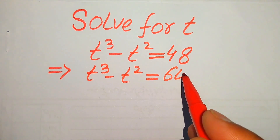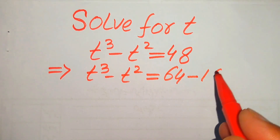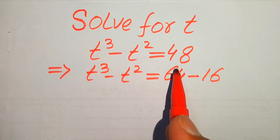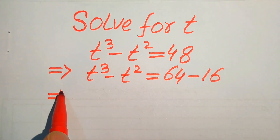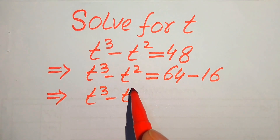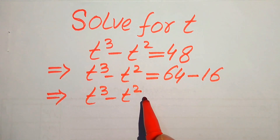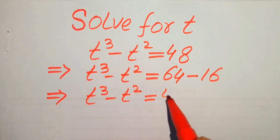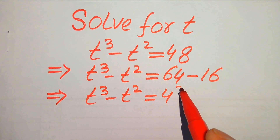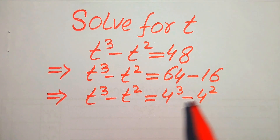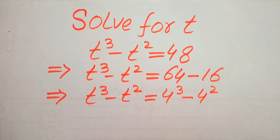We break 48 as 64 minus 16, because 64 minus 16 equals 48. Now we need a little simplification: it will be written as t cubed minus t squared equals 64, which we write as 4 cubed, minus 16, which we write as 4 squared.